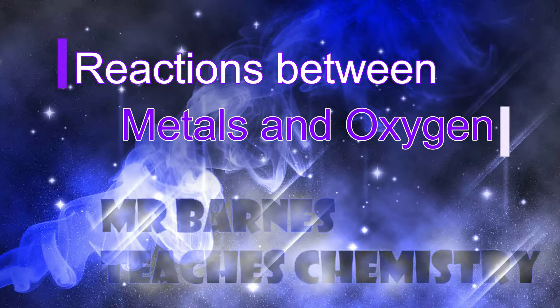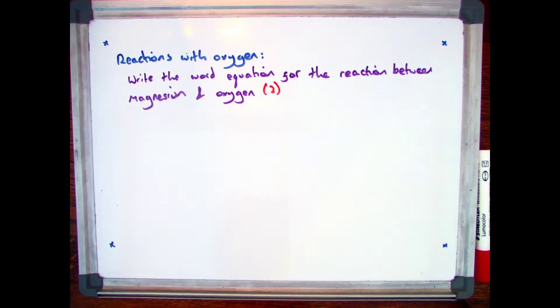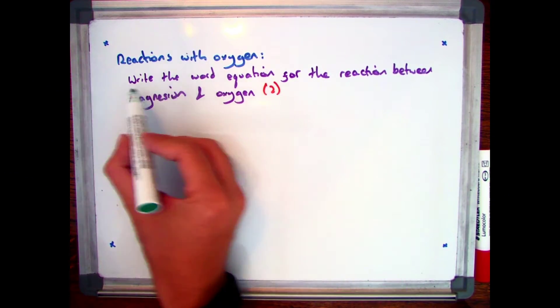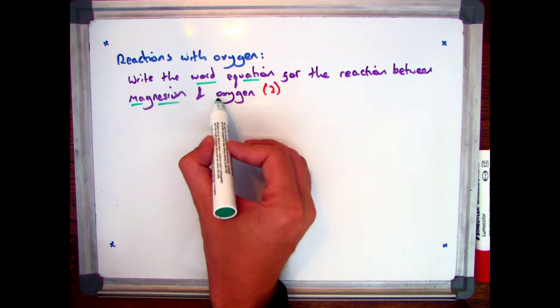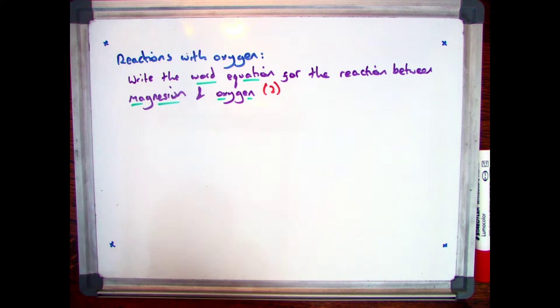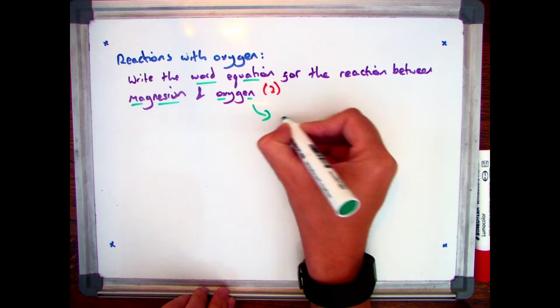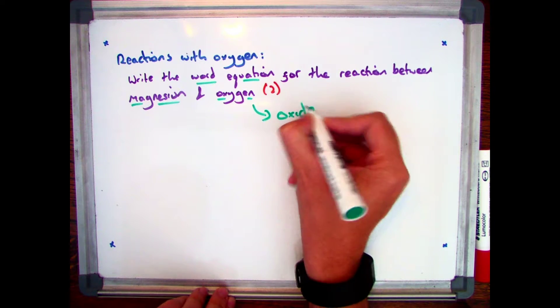The reactions we're going to be looking at here are between metals and oxygen, so oxidation reactions. An example of a question you might get is write the word equation for the reaction between magnesium and oxygen, which would be worth two marks. Now the key thing to note is that whenever you react a metal with oxygen you get an oxide present.